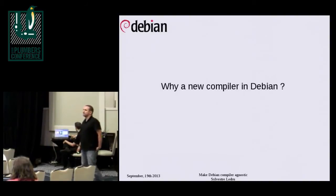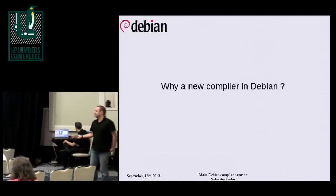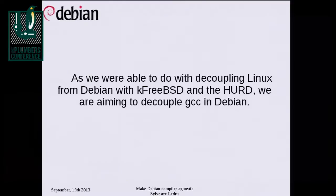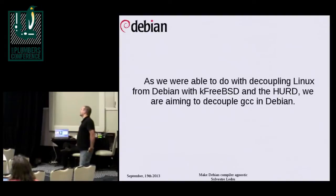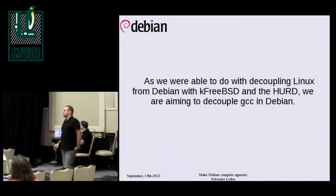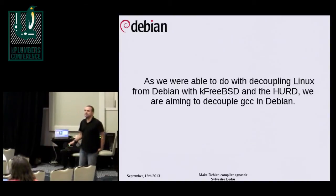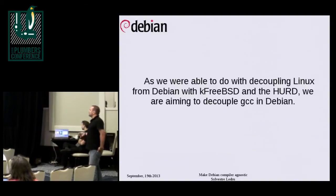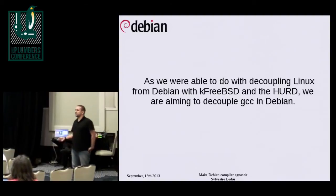Why do we need a new compiler in Debian? From my point of view, in Debian we used to have only the Linux kernel and now we have two other kernels. I agree that nobody is really using them — it's just a proof of concept — but we've been able to decouple the Linux kernel from the Debian distribution, and I would like to do the same with GCC.